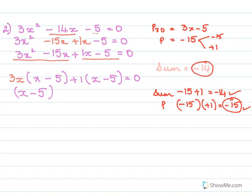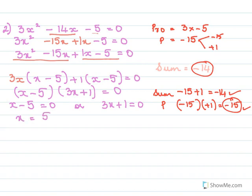So we have (x minus 5)(3x plus 1) equals 0. So x minus 5 equals 0 or 3x plus 1 equals 0, which means x equals 5 and x equals minus 1 by 3. So the answer is x equals 5 or minus 1 by 3.